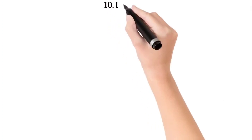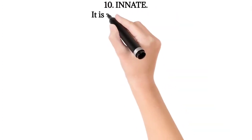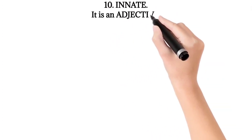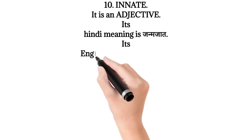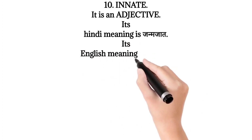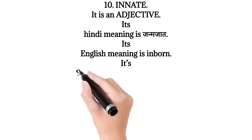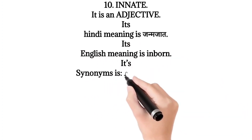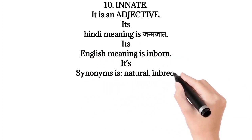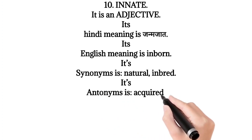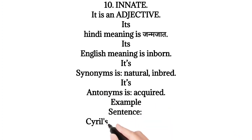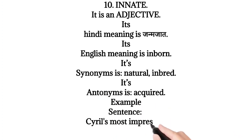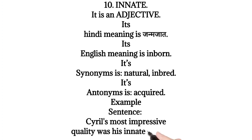10. Innate. It is an adjective. Its Hindi meaning is Janjaat. Its English meaning is Inborn. Its synonyms are Natural, Inbred. Its antonym is Acquired. Example sentence: Cyril's most impressive quality was his innate goodness.